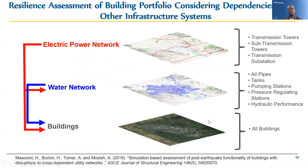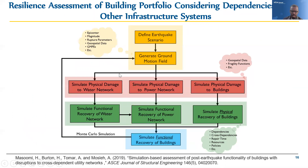I'll end by talking about the importance of interdependency, sticking with the Napa region as a testbed. Here our primary focus is on the functionality of buildings, but we're considering the fact that buildings are dependent on water and power for their functionality, and that the water system is itself dependent on the power system. The overall framework starts from the bottom: we're interested in functional recovery of buildings, fed by physical damage to buildings, physical recovery of buildings, and the functional recovery of the water and power networks — keeping in mind that dependency between water and power. The red layer is where we simulate physical damage, and at the top is where we define the hazard.